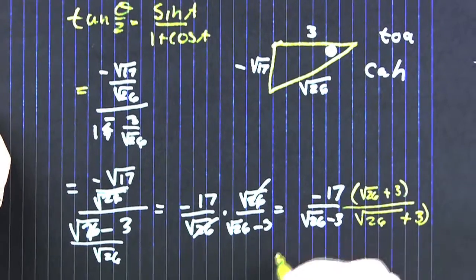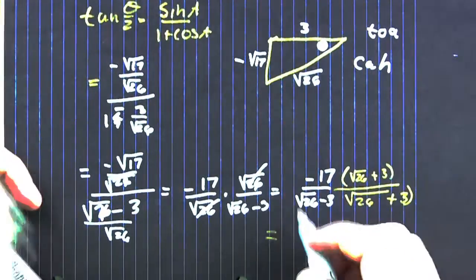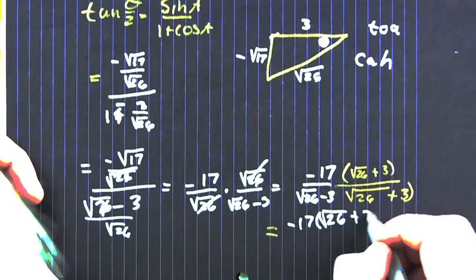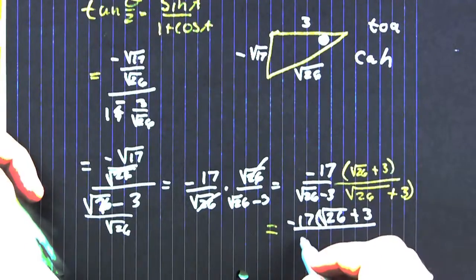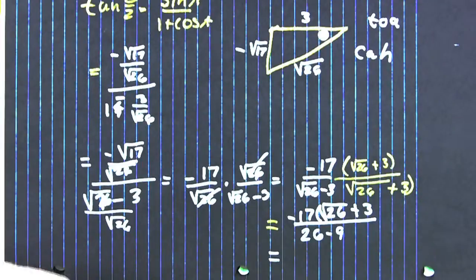Alright. That numerator? I think you forgot the root somewhere. The root of 17? Use the difference of squares on the bottom. Good.